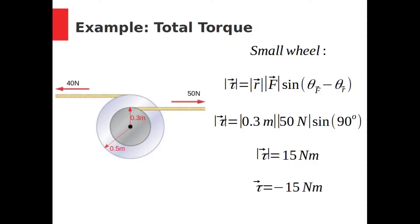For the smaller wheel, we can substitute the lever arm, that's the radius of the wheel, 0.3, and the force, 50 newtons. The angle between the two is 90 degrees. We get a torque of 15 newton meters. This torque would tend to rotate the small wheel clockwise, so we will call it negative 15 newton meters.